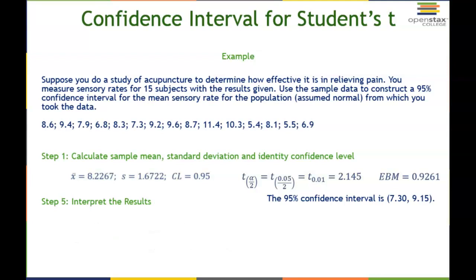Our final step is to interpret what this means. We estimate, with 95% confidence, that the true population mean sensory rate is between 7.30 and 9.15.